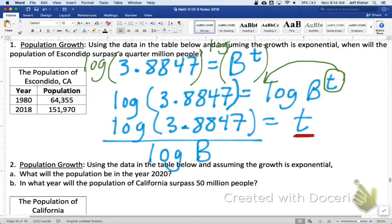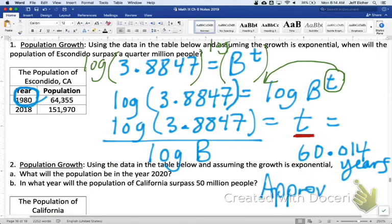And that's our answer. So, when you're typing that in your calculator, I still have this 3.8847 in my calculator. I'm going to do log of my previous answer, hit enter, and then divide by log of b. The time I get is 60.014. That's in years. And we defined zero as 1980. So, this would be 60 years after 1980, approximately 2040. If the rate continues to grow like it is in Escondido, in about year 2040, it will have a quarter million people.